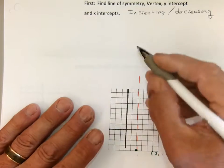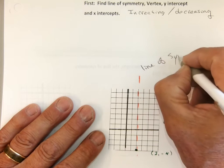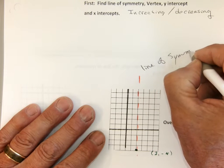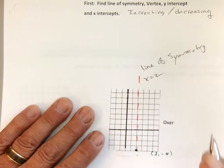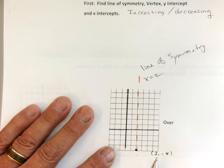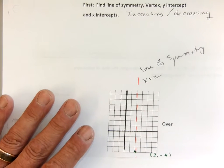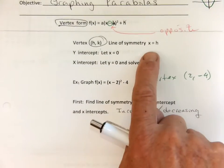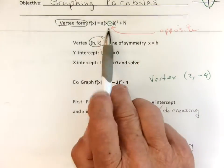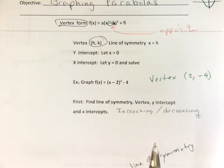My line of symmetry is just x equals 2, because it has to be the x value of the vertex. My notes say line of symmetry is just x equals h, which is that number right there. For us, it's going to be the 2.